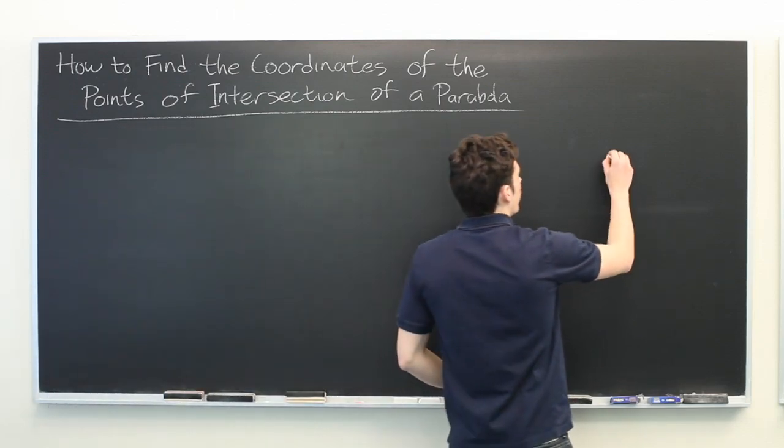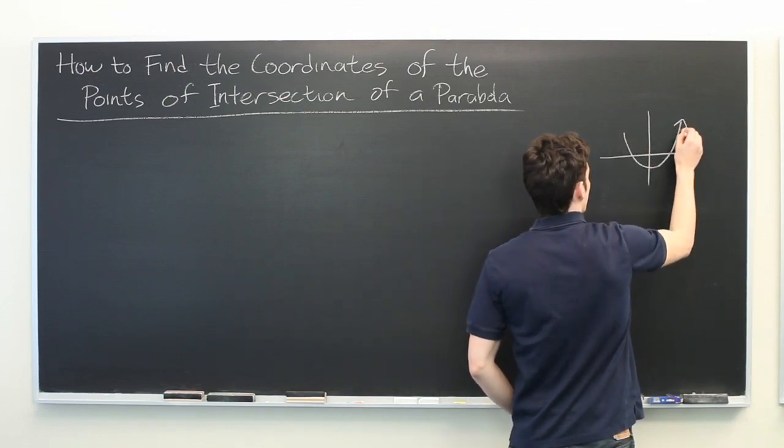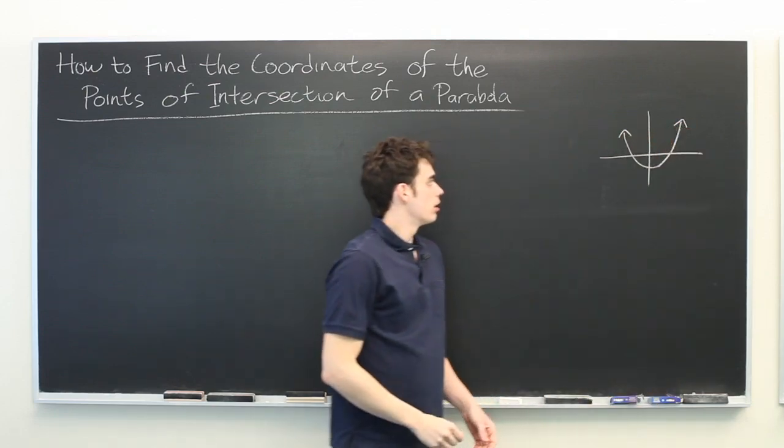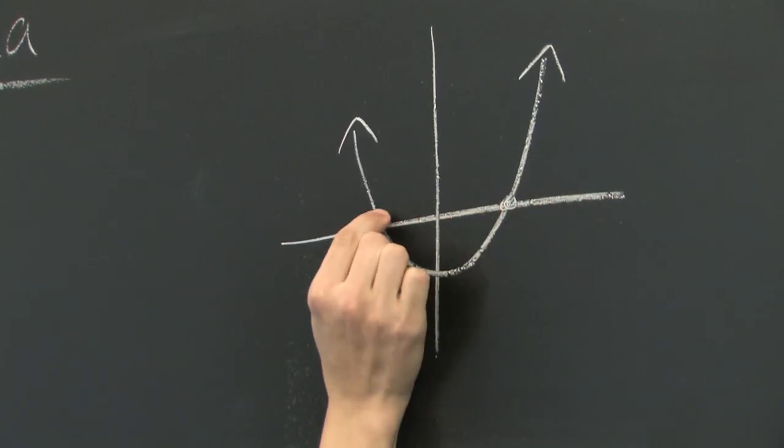So if we have a graph of some parabola that might look like this, an important question that often comes up is where does the graph intersect the x-axis?